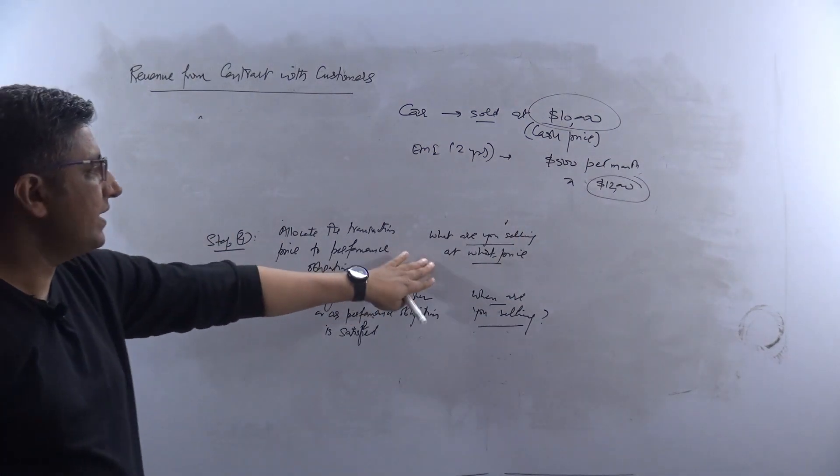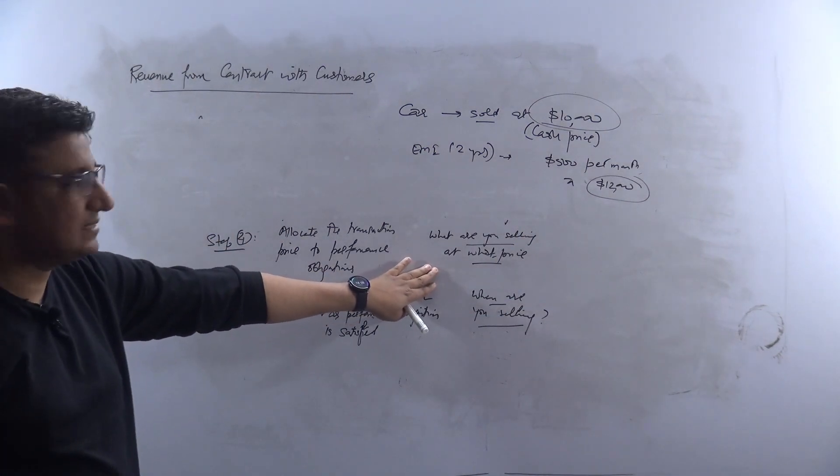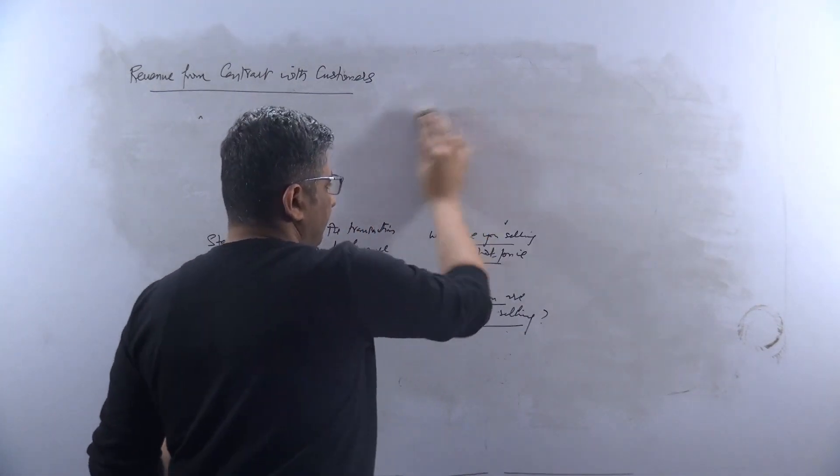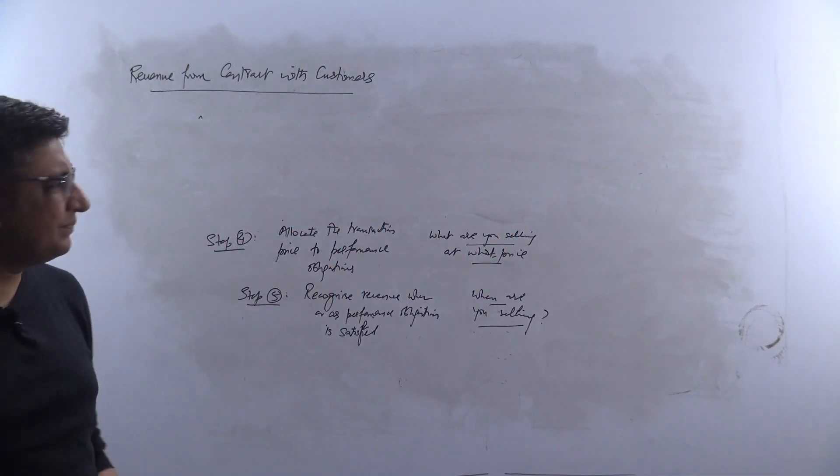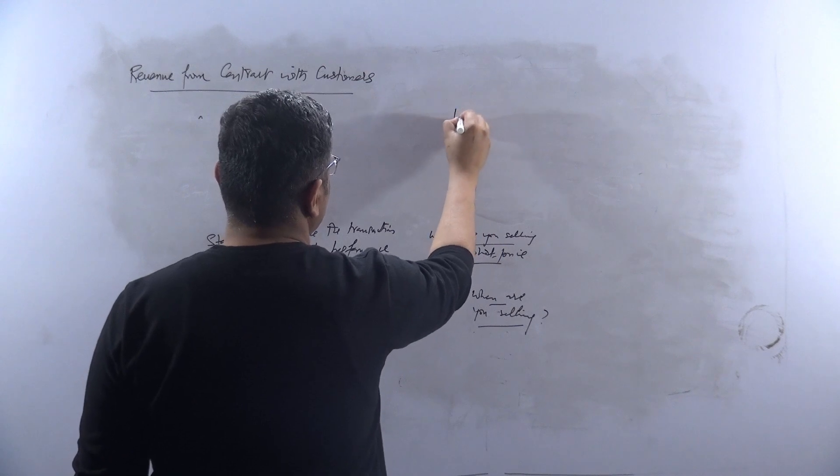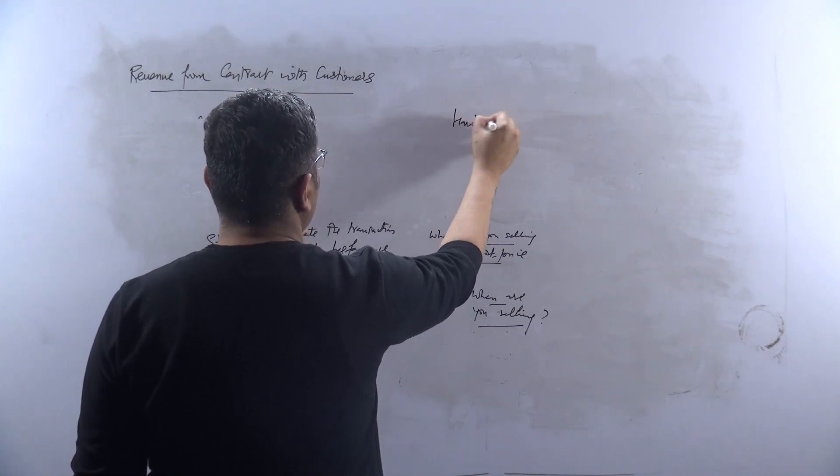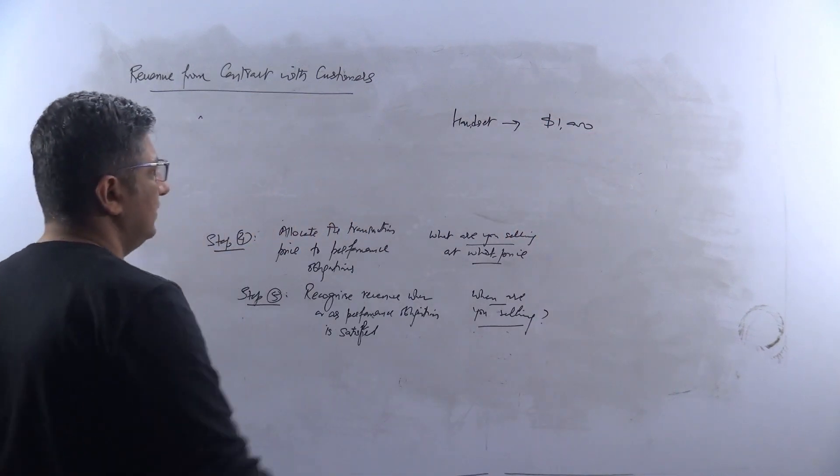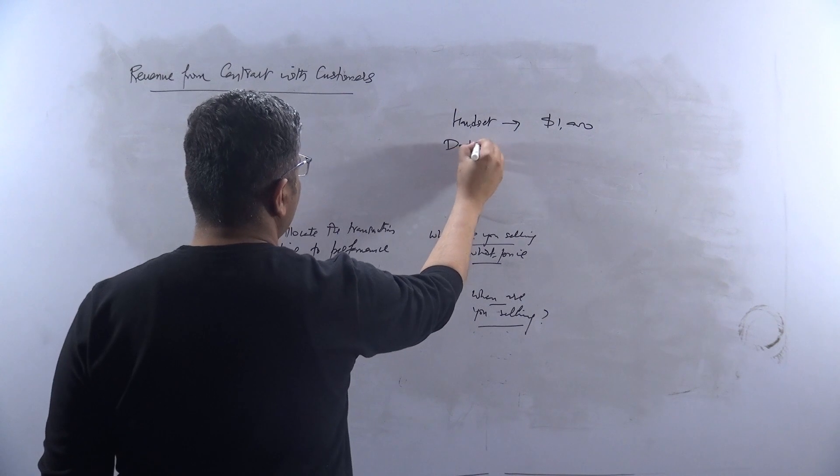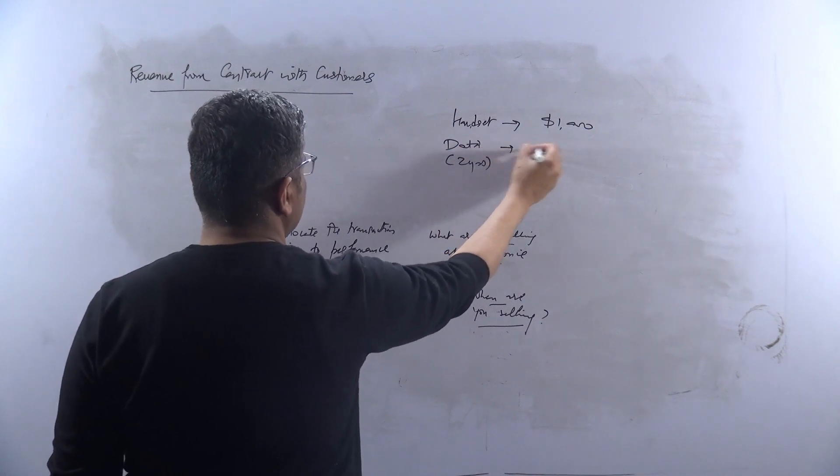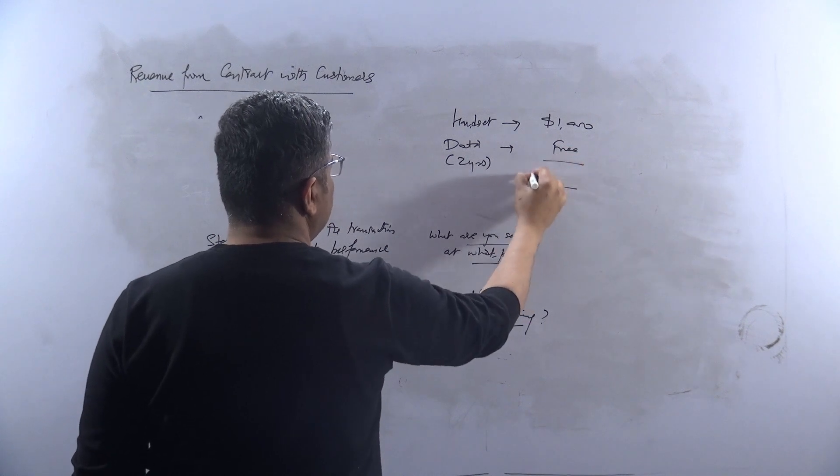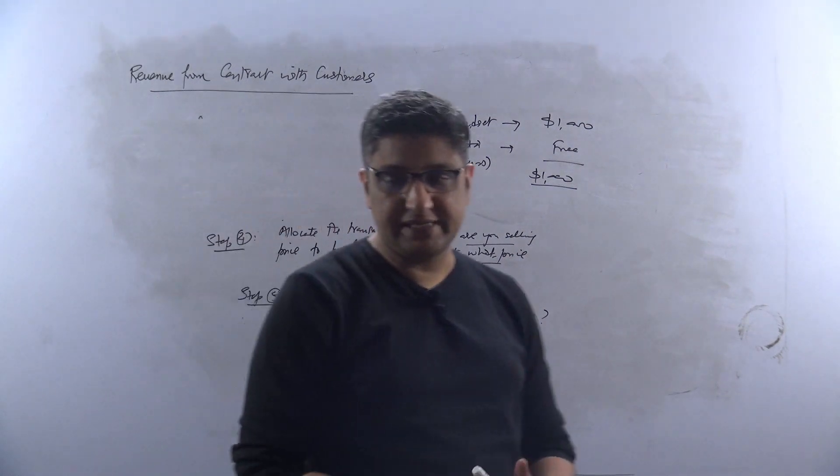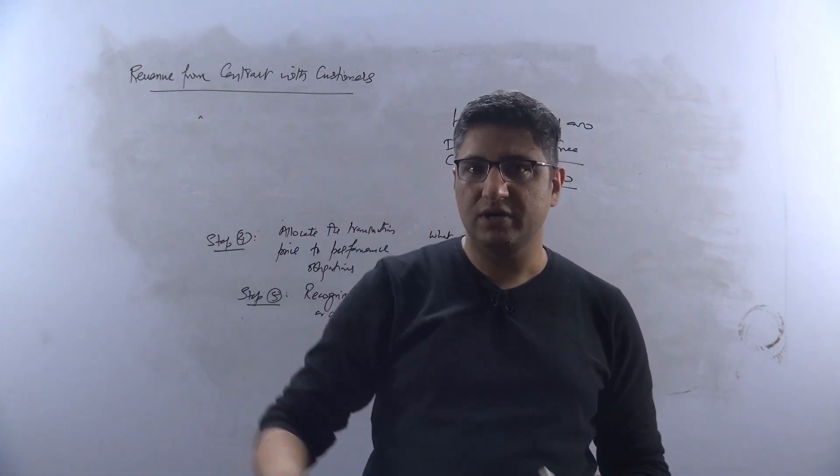The fourth part, it says: what are you selling and at what price? Now this would be, again, using the example of that mobile phone. We are saying that you buy a handset, let's say for $1,000, and the data of two years is given to you for free, which means that the invoice value is $1,000. As a customer, you're paying $1,000 and that's the end of the story.